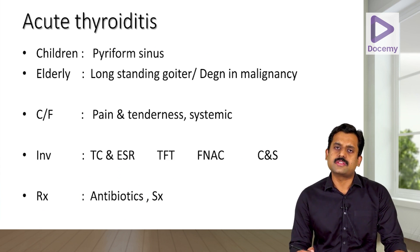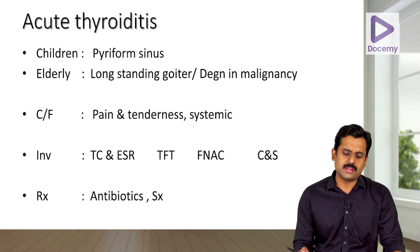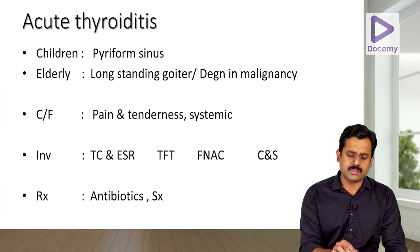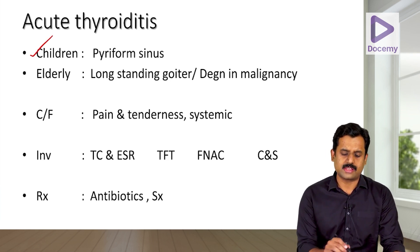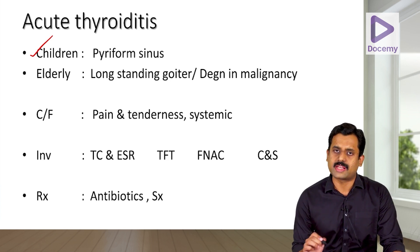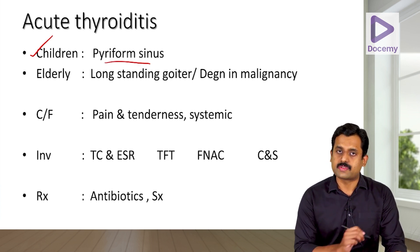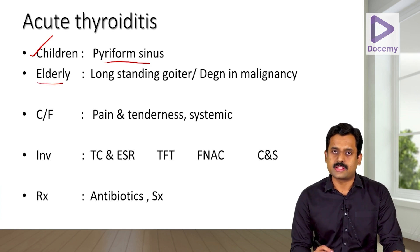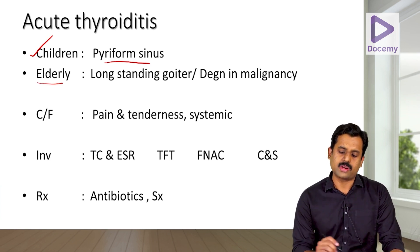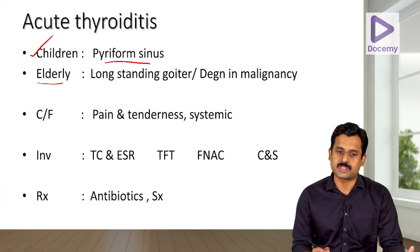Acute thyroiditis is acute inflammation of the thyroid gland due to bacterial or fungal etiology. It usually happens in people with predisposing features: in children, persistence of the fourth pharyngeal pouch leading to an opening near the piriform sinus; or in the elderly, presence of a long-standing goiter, degeneration, or thyroid malignancy.